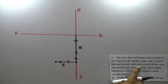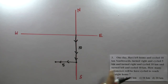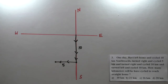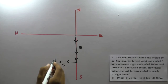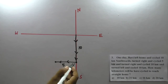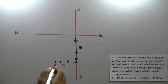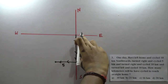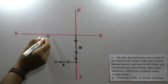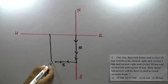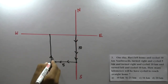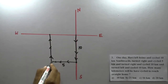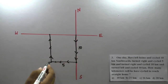Next, he turns left and cycles 10 kilometers, then turns right and cycles 10 kilometers. So this is 10 kilometers, and again you will reach this point. Right-hand side is this side and left-hand side is this side — turns right and cycles 10 kilometers.